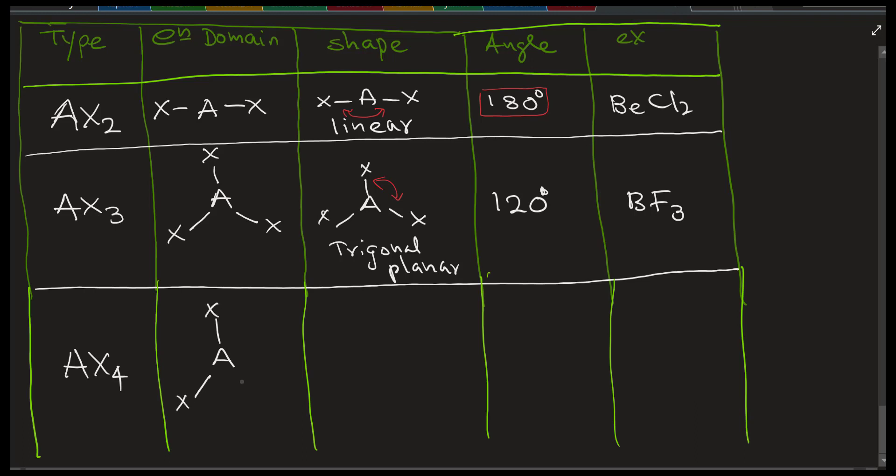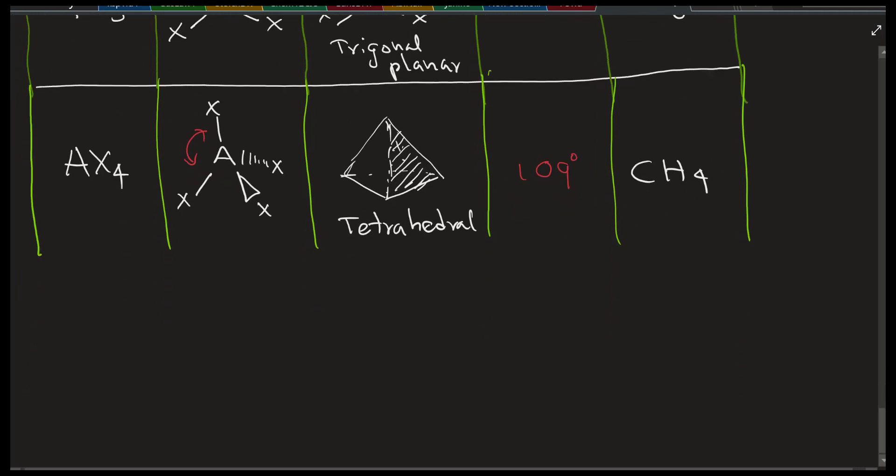Now the next one, AX3 goes to AX4. This one is the tetrahedral shape. We can draw why tetrahedron is actually four sides of the object. The geometric shape has four sides. And this angle is 109. Every angle is 109 in this molecule. An example is CH4. This one I would memorize.